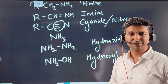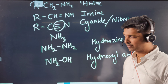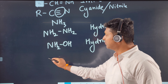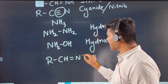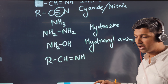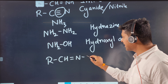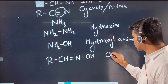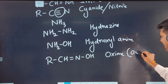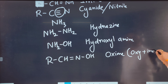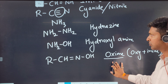An imine is RCH=NH. If you attach an OH to that imine, it becomes an oxime. The word oxime is derived from 'oxygen-containing imine' — an imine along with an oxygen is called an oxime.